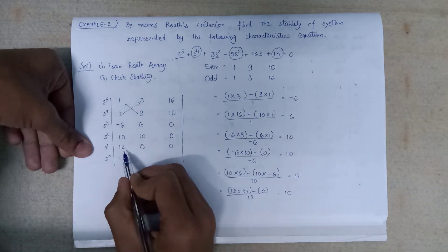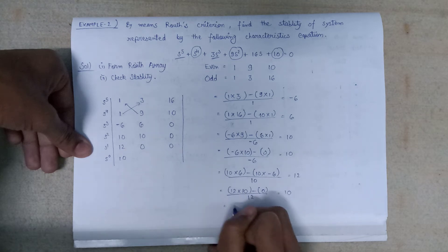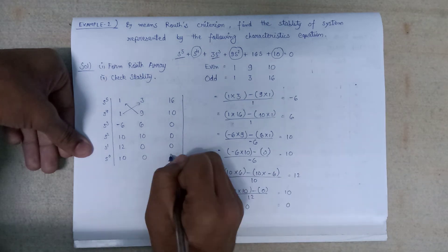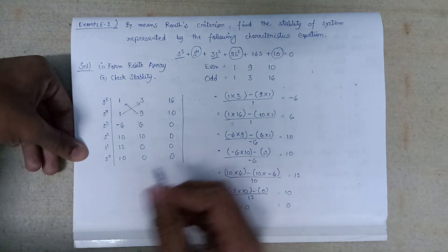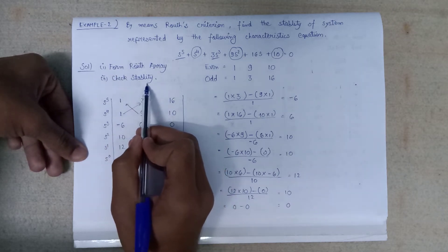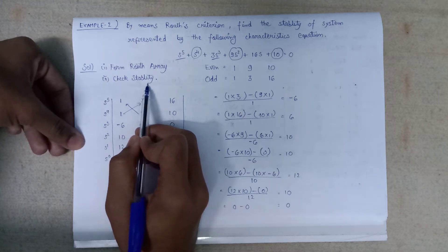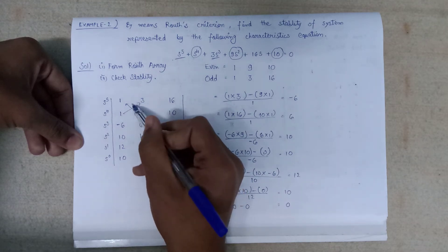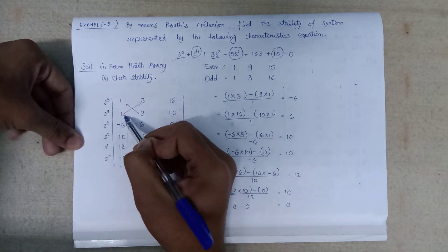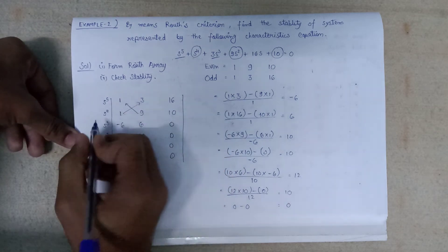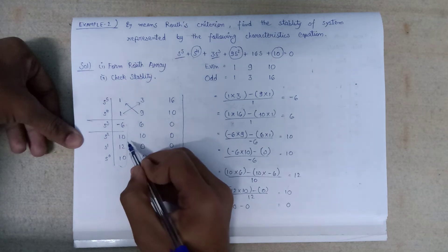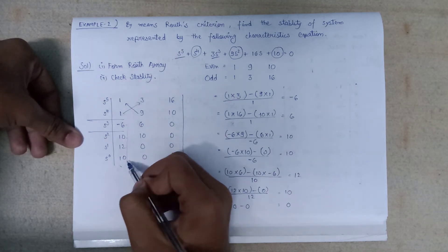Next, taking 10 and 12: 12 multiplied by 10 minus 0 multiplied by 10, the whole divided by 12, gives 10. We write 10 here and 0 in the remaining entry. The Routh array is now successfully formed. Moving to checking stability, we count the number of sign changes in the first column.